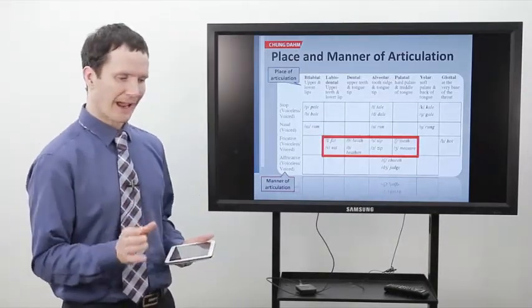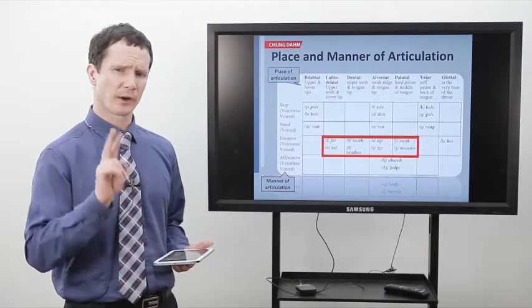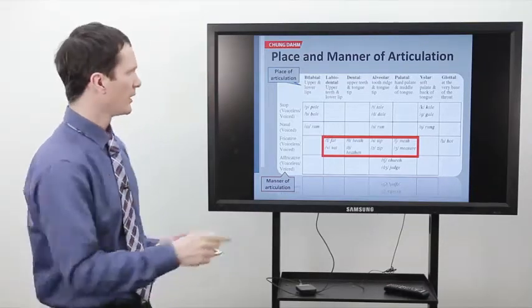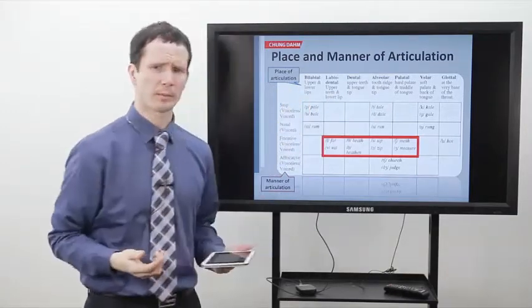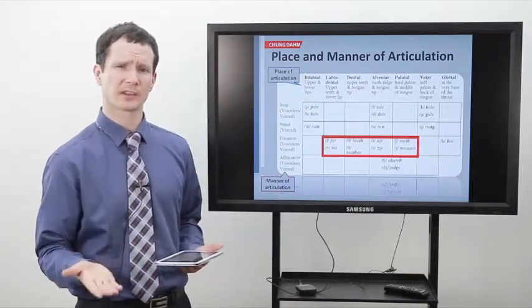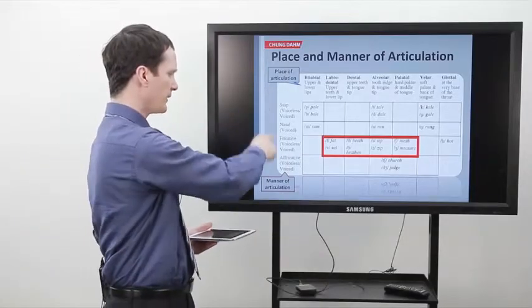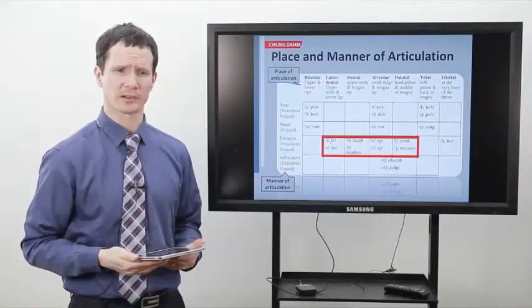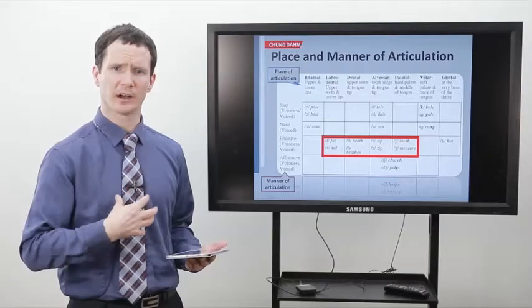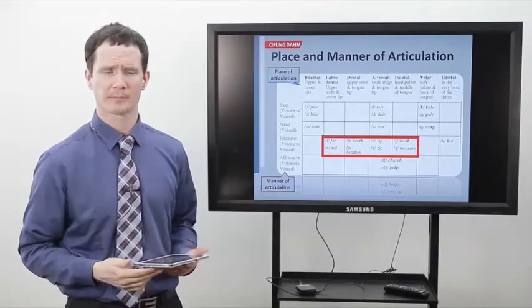When we look at the individual consonant sounds of English, there are two things we need to keep in mind. First, where in the mouth we pronounce the sounds — that's the place of articulation. Is it at the front of the mouth, the back of the mouth, or down in the throat? Second is the manner of articulation — how we are pronouncing these sounds. All sounds of English begin with air in the lungs, leaving the lungs and coming out the mouth, and then we do things to that air — we bend it, shape it in different ways, and that makes the different sounds of English.